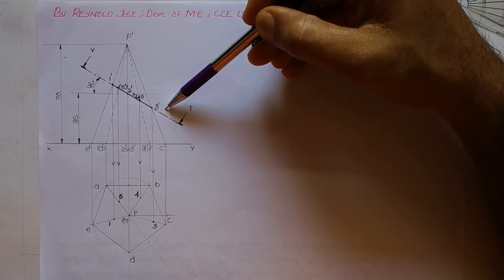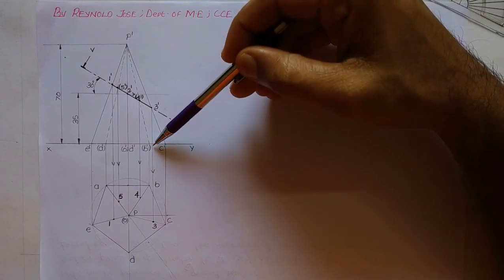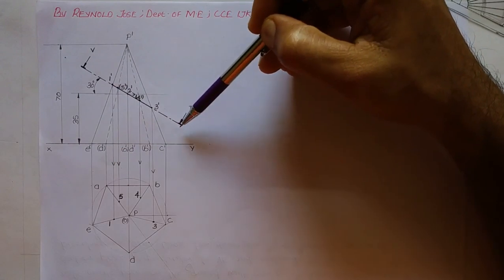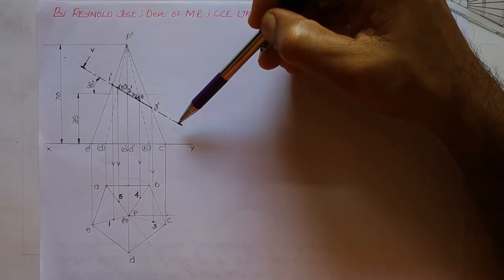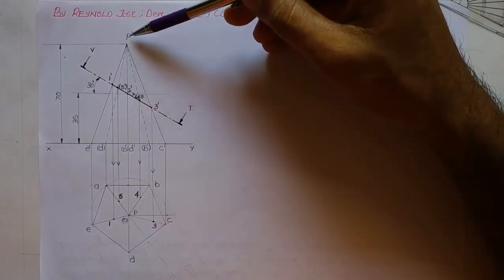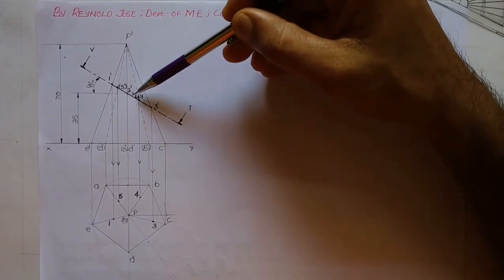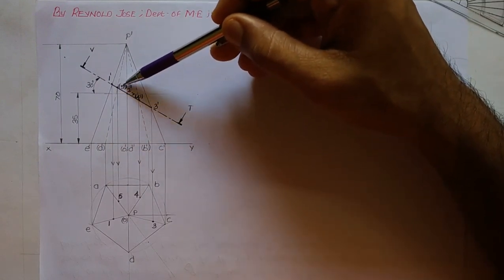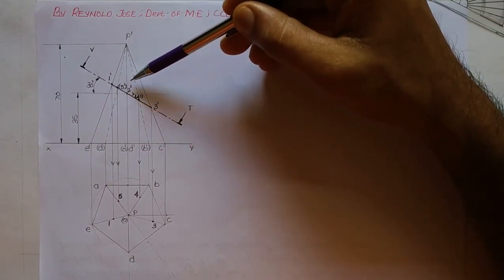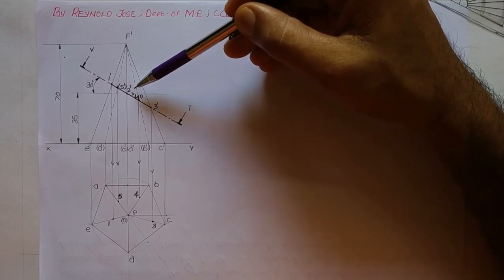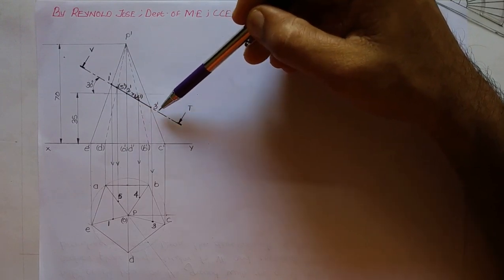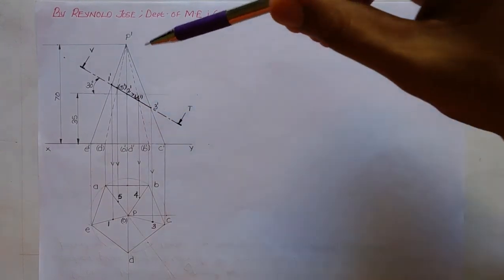The pyramid also has 2 invisible edges in the front view: P'-B' and P'-A'. The section plane also cuts those slanting edges, and those meeting points are marked as 4' on P'-B' and 5' on P'-A'. Points 4' and 5' are on the other side, which is not visible in the front view. After marking 1', 2', 3', 4', 5', we have to transfer them to the top view.